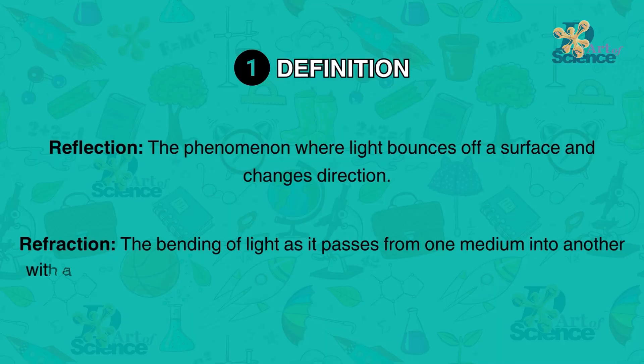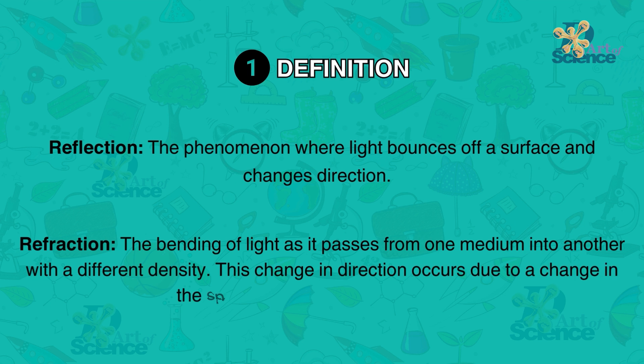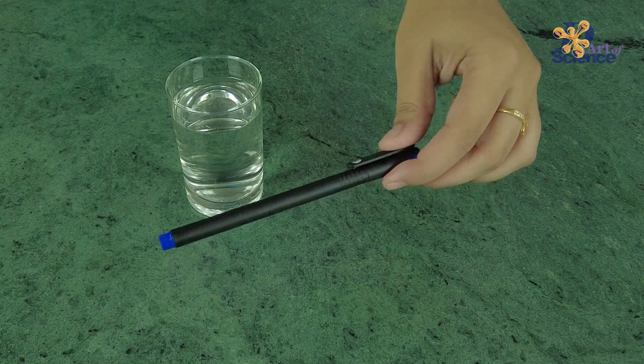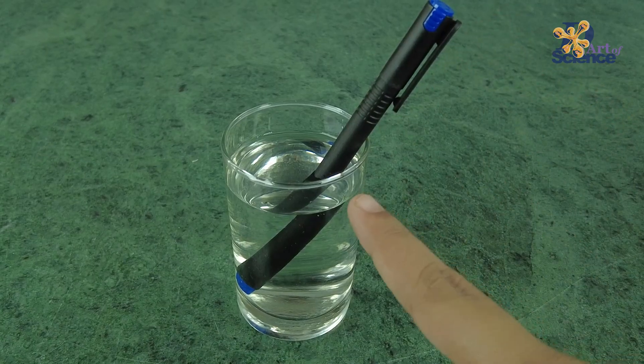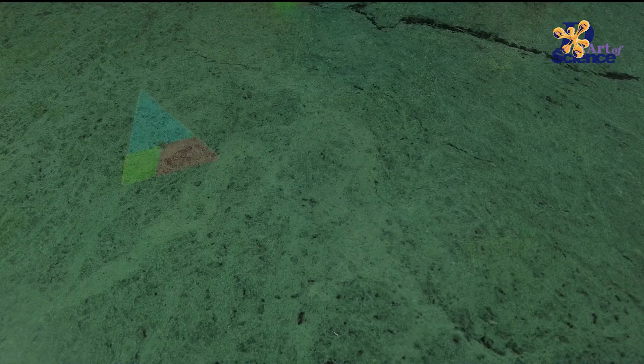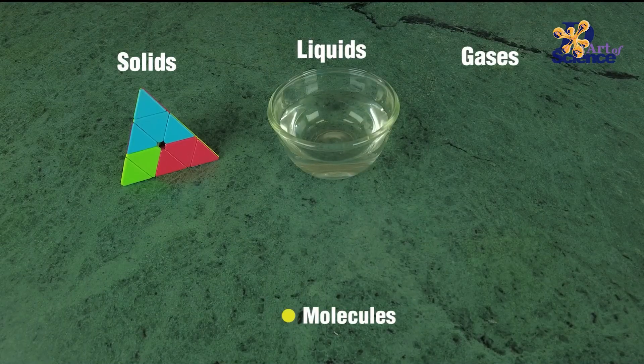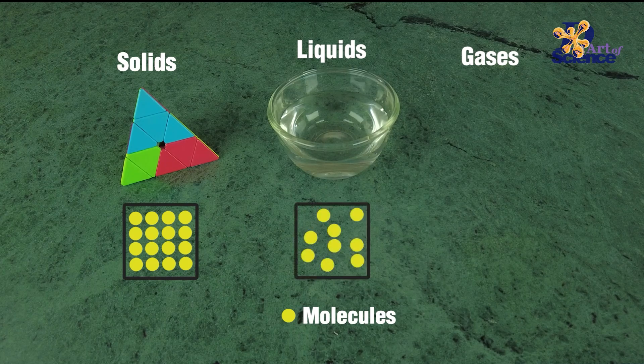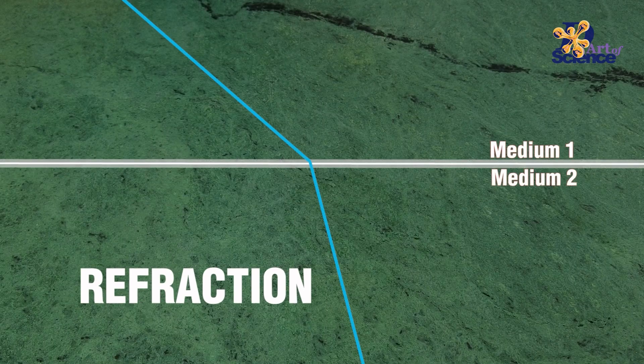Now refraction. Refraction is the bending of light as it passes from one transparent medium to another one with a different density. This change in direction occurs due to the change in speed of light as it travels across different mediums. To understand refraction better, check out our detailed video on what is refraction. I have linked it up here and in the description box as well.